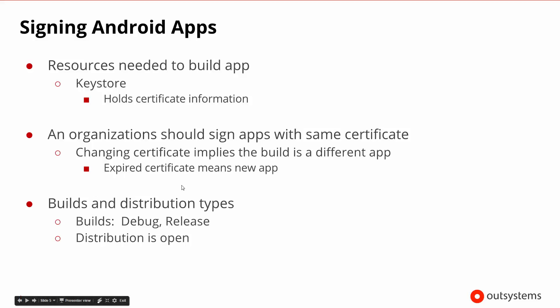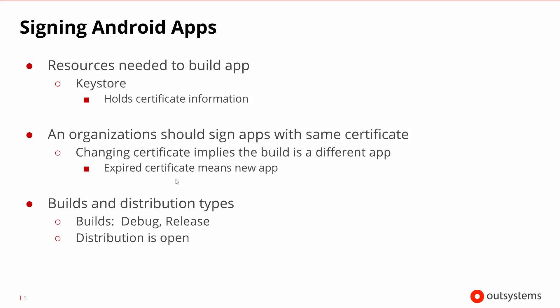Protecting your certificate and picking the right expiration date are really important. It's usually good to think of an expiration date for Android certificates as something that would be for the whole lifetime of the app — so if you think the app will be around for five or ten years, go ahead and set that as the expiration. For builds and distribution types in Android, we have debug and release. Once a build is available and out there, you can pretty much install it on any type of Android device, so distribution is generally open — quite different from Apple, which had many more types of distributions that could limit where the app can be installed.